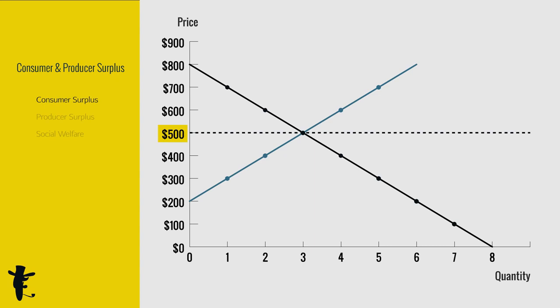different consumers have different willingness to pay. I'm willing to get the computer at $700. It costs only $500. My surplus is $200.